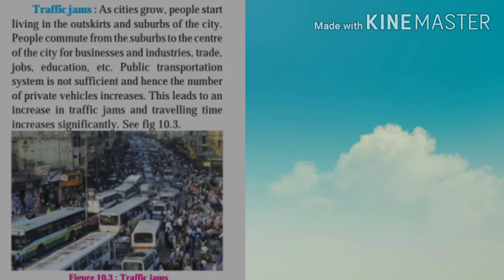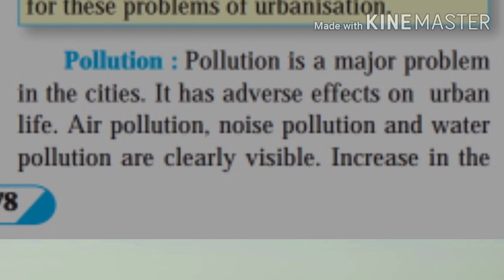The next problem of urbanization is traffic jams. As cities grow, people start living in the outskirts and suburbs of the city. People commute from the suburbs to the center of the city for businesses, industries, trade, jobs and education. The public transportation system is not sufficient, and hence the number of private vehicles increases. This leads to an increase in traffic jams, and traveling time also increases significantly. You can see figure 10.3 for an example of traffic jams in the city area.